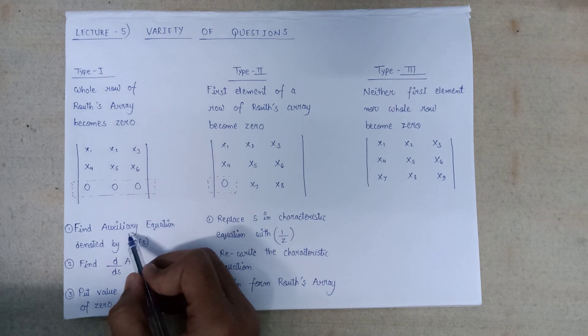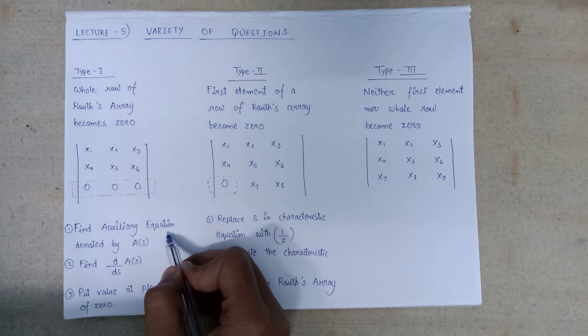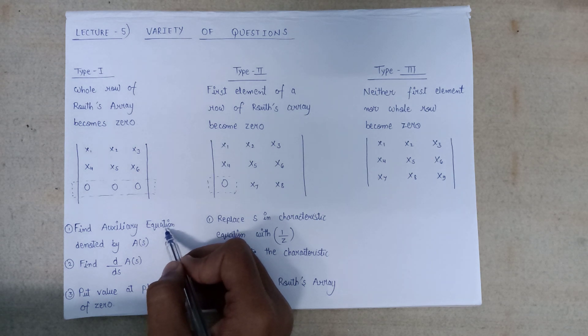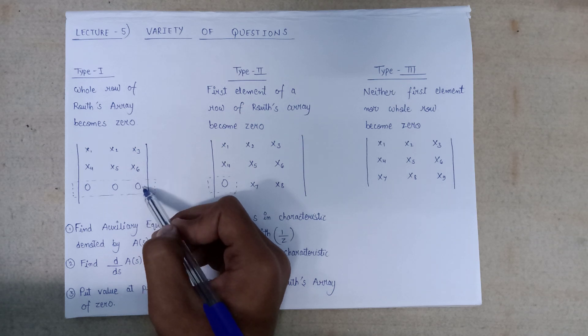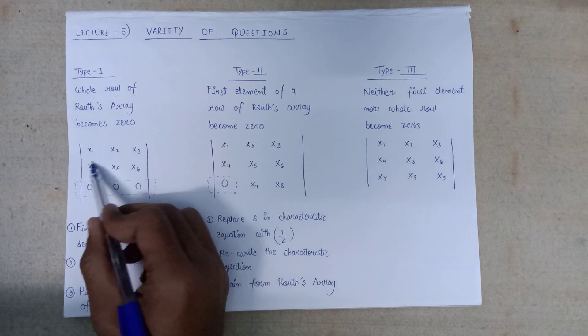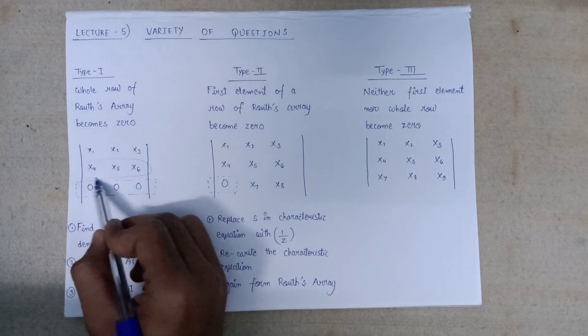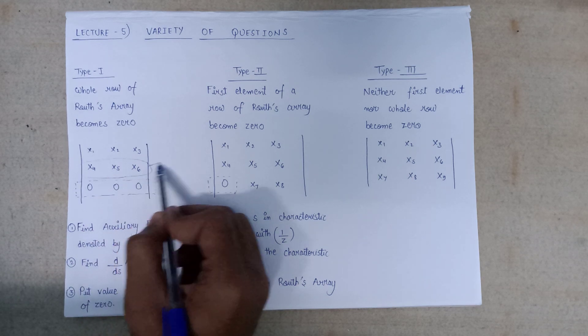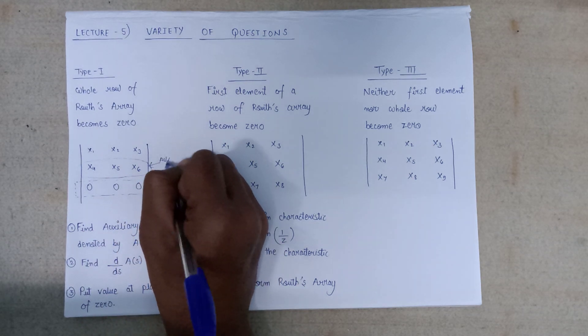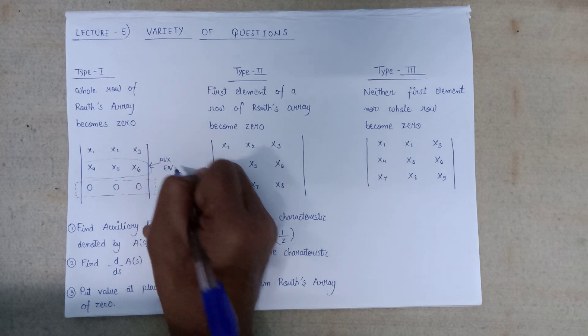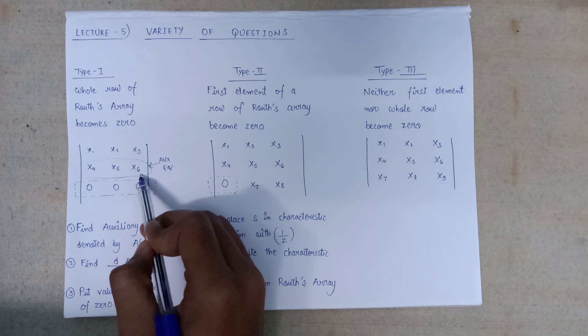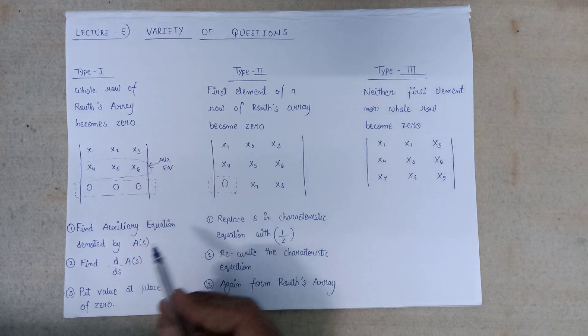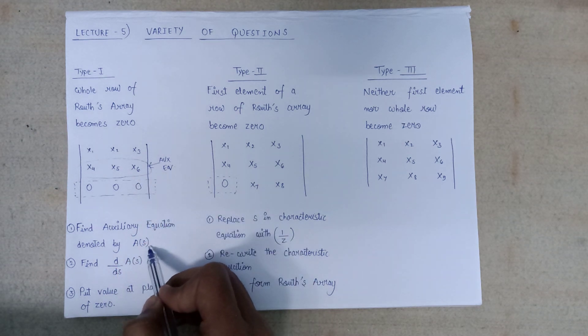First of all, we have to find the auxiliary equation in this type of question. The auxiliary equation can be formed by using the row of the Routh array just above the all-zero row. This row will help us in forming the auxiliary equation. The auxiliary equation will be denoted by A(s).